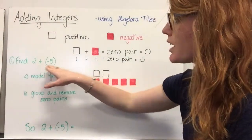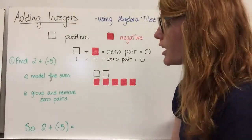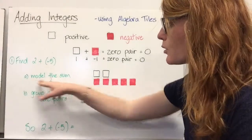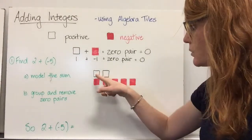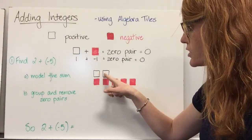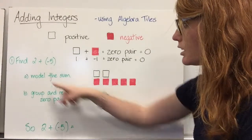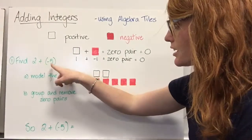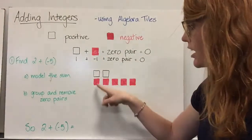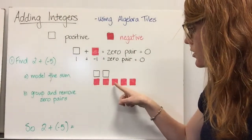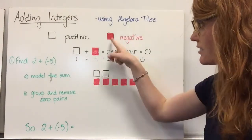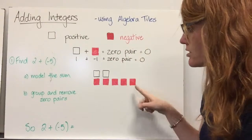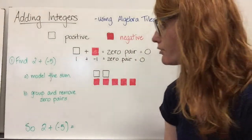Find two plus negative five. First, we're going to model the sum. Here we have positive two. Then we're adding negative five — one, two, three, four, five — they are negative, so negative five.